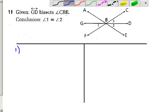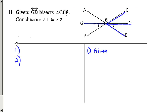You're given that GD bisects angle CBE. The fact that GD, this line here, bisects angle CBE tells you one thing in particular: it cuts that angle in half, which means angle 2 is congruent to angle 3.